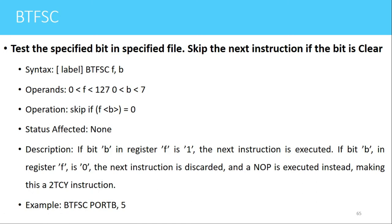The next instruction is BTFSC, which stands for Bit Test File Skip if Clear. If the bit in the particular SFR is clear, then the next instruction will be skipped and further instructions will be executed. The syntax is BTFSC F comma B. An example is BTFSC PORTB comma 5, meaning if bit number 5 of the PORTB register is clear, skip the next immediate instruction; otherwise execute all instructions after it.